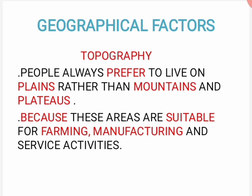First geographical factor: topography. Topography means jahan par jis area mein aap rehte ho, wo kaisa hai — mountainous hai, plain hai, coastal area hai? Mountainous areas mein comparatively log kam rehte hain, kyunki itni facilities wahan pe available nahi hoti. Aur plain areas mein log zyada rehte hain, kyunki usme har facility easily available hoti hai.